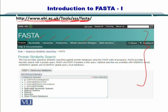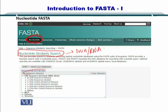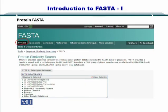You can do a protein similarity search by clicking on proteins. Similarly, if you click on nucleotides, you get the nucleotide similarity search, which includes both DNA and RNA sequences. You can also select the database from which you want to obtain sequences for comparing your query, and you can do protein similarity search as well.